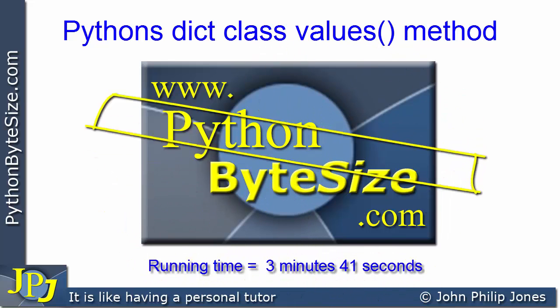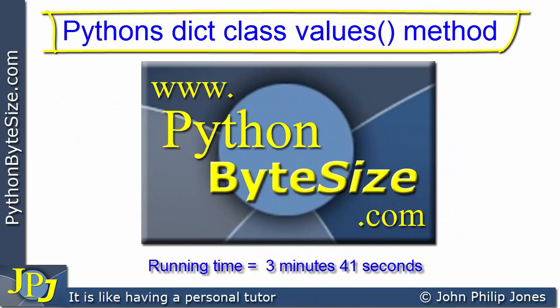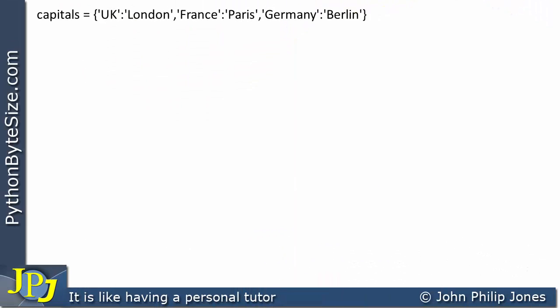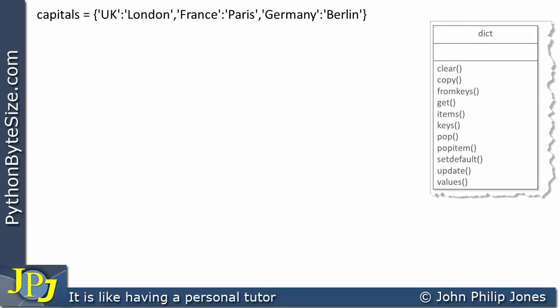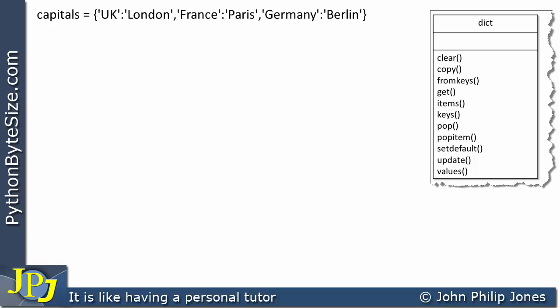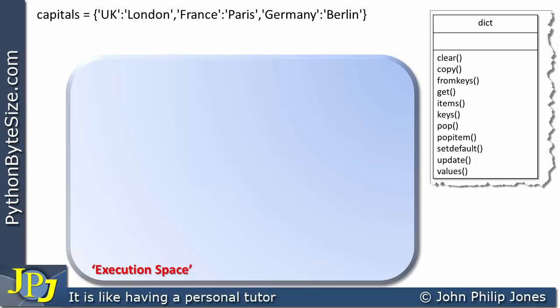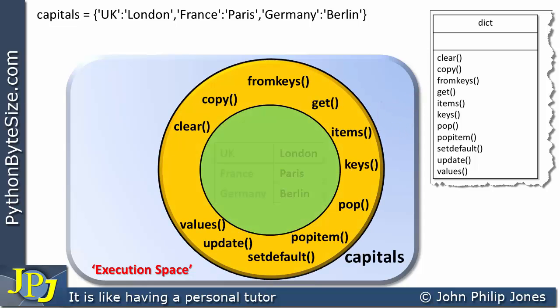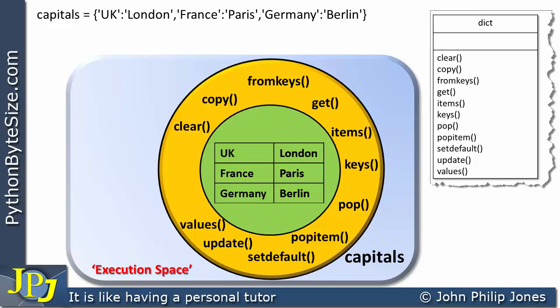In this video we're going to look at the values method from the Python dictionary class. This program statement is responsible for the production of a Python dictionary, which is an instance of the dictionary class. When the program statement executes, we're going to consider the execution space, and into this execution space an object will be created.